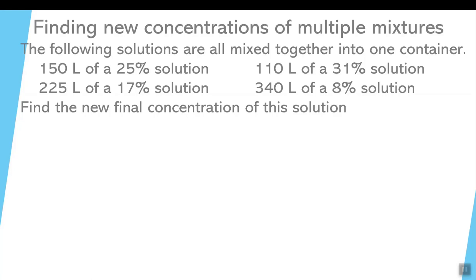Now just some common sense stuff before we get into the actual solution. We know that the highest concentration solution is 31%, and we know that the lowest one is 8%. So logic says that the new solution concentration, when you mix them all together, is somewhere going to be between 31% and 8%.